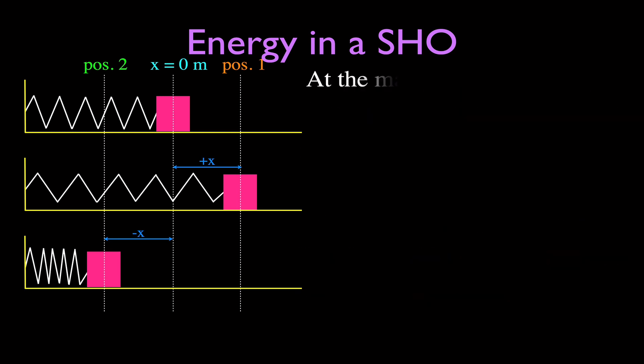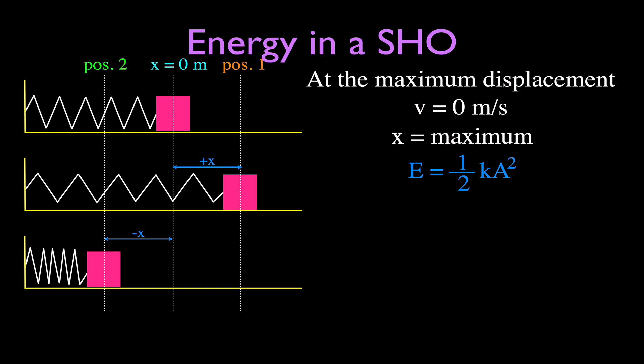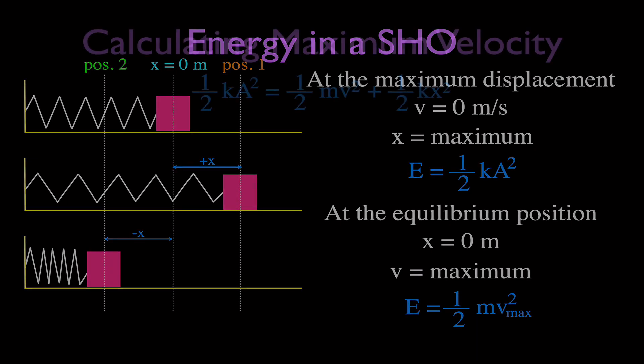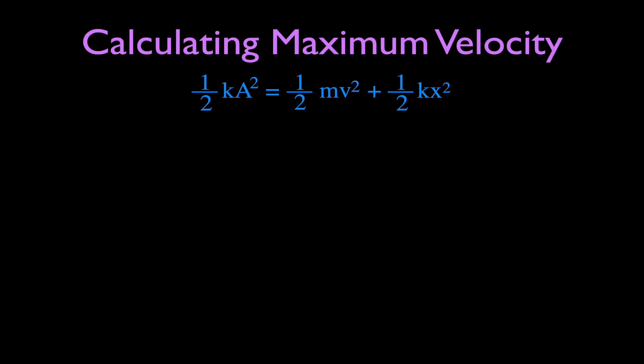To summarize: at maximum displacement (the amplitude), the velocity is zero, there's no kinetic energy, and we can calculate the total energy as one-half KA squared — all stored as potential energy. When the mass returns to the equilibrium position, displacement is zero, there's no potential energy, and the mass is at its maximum velocity, so all energy is kinetic: one-half mv squared.